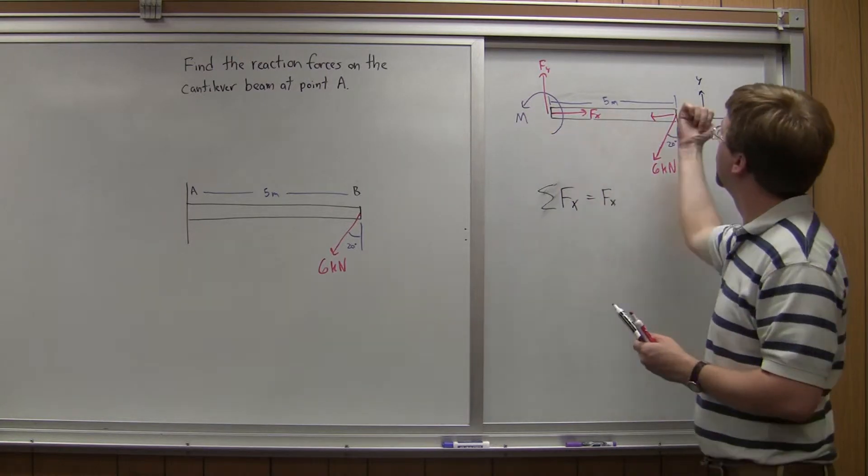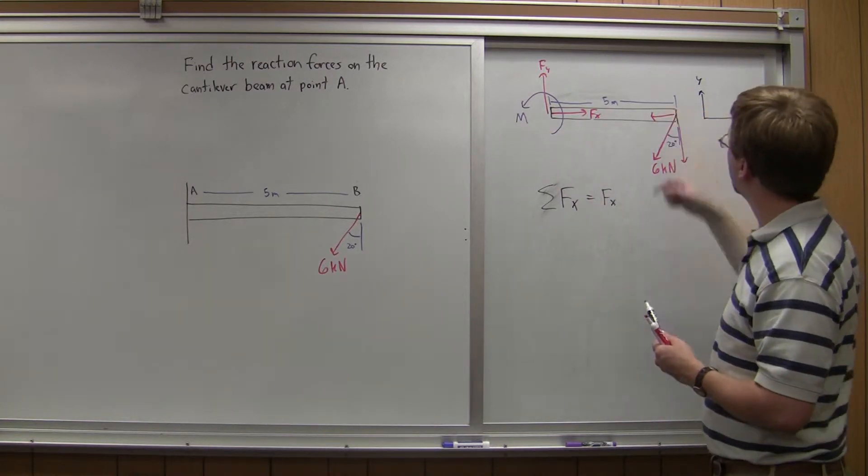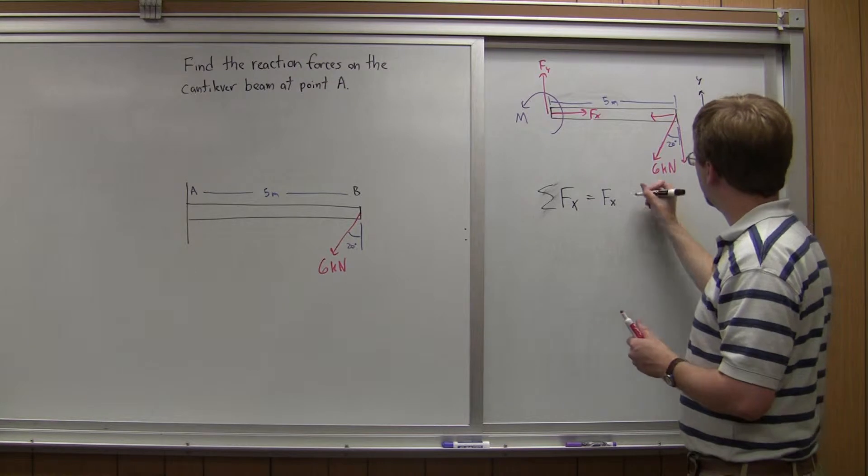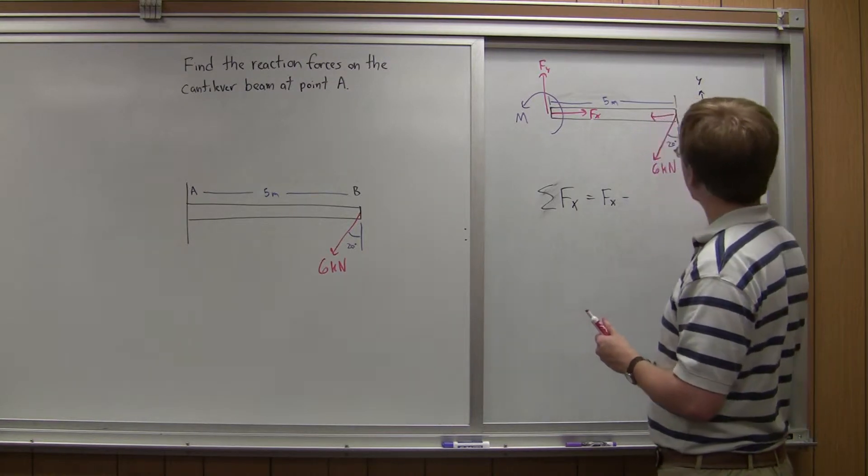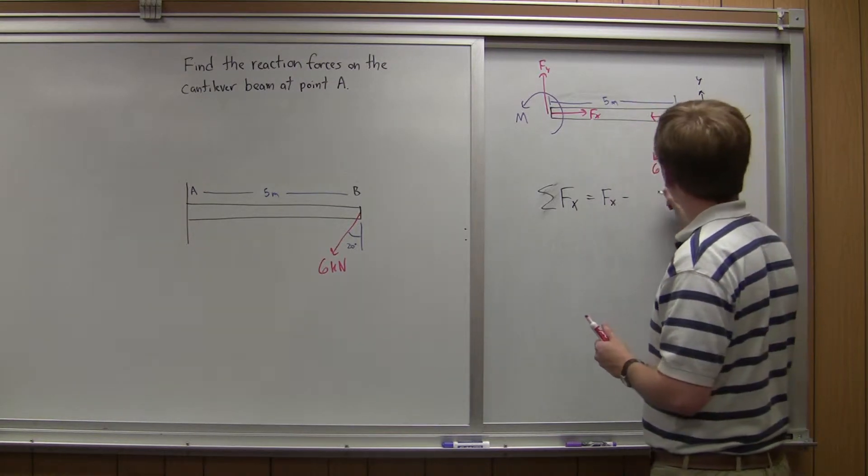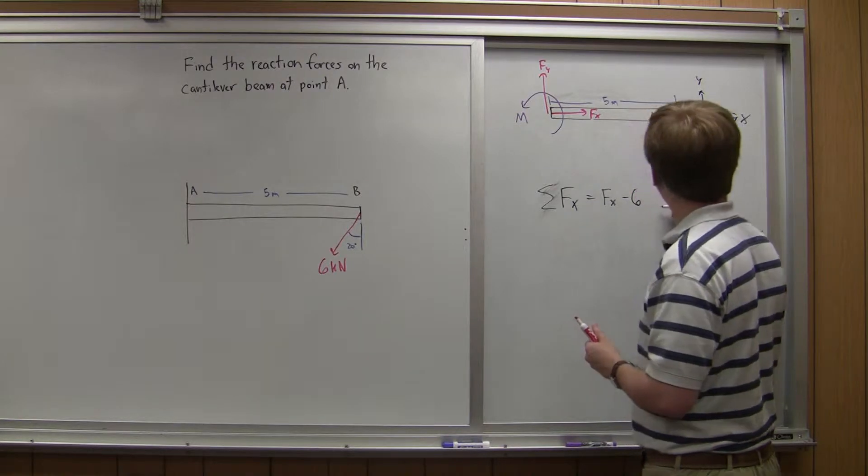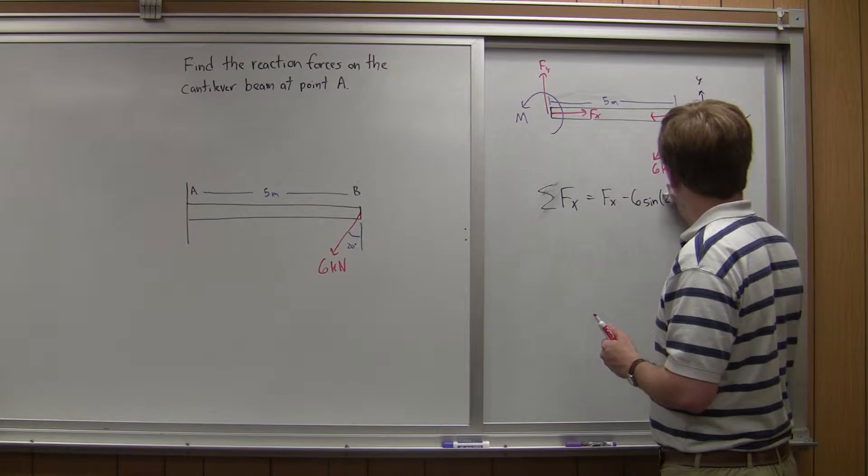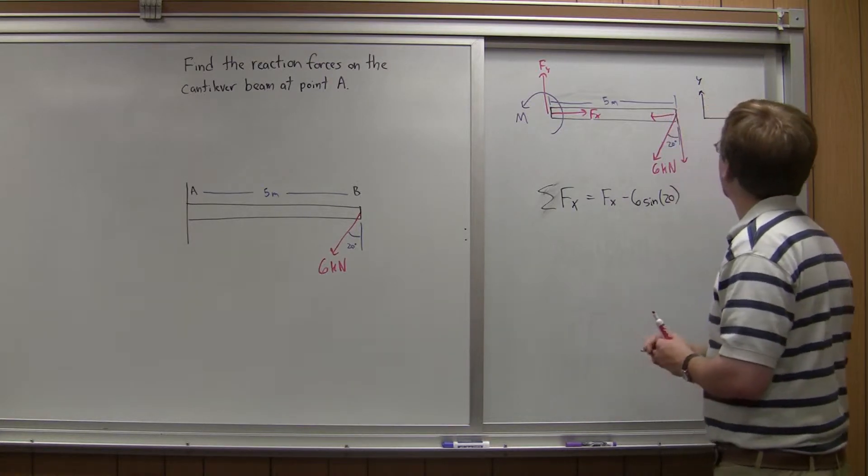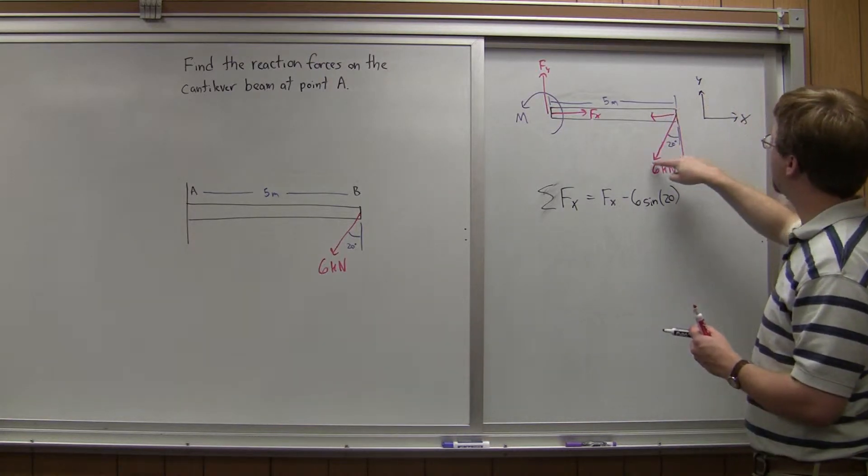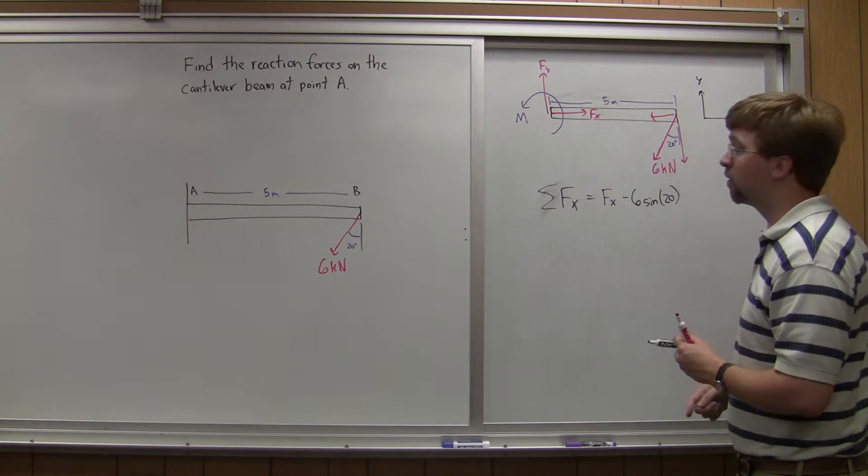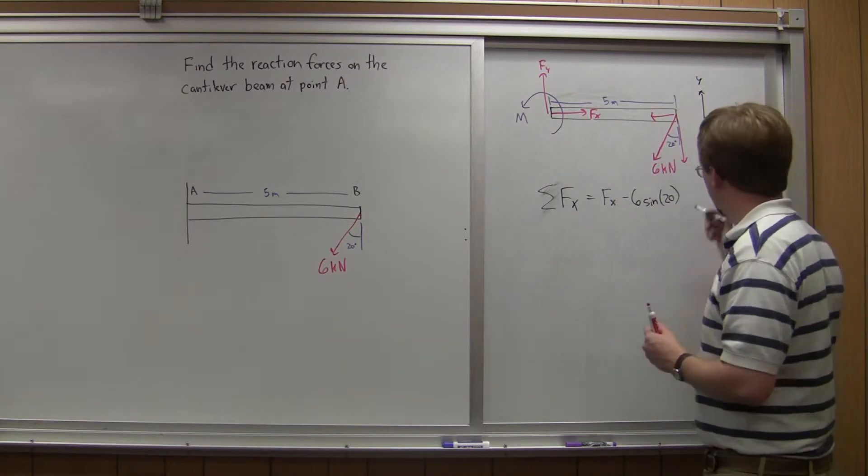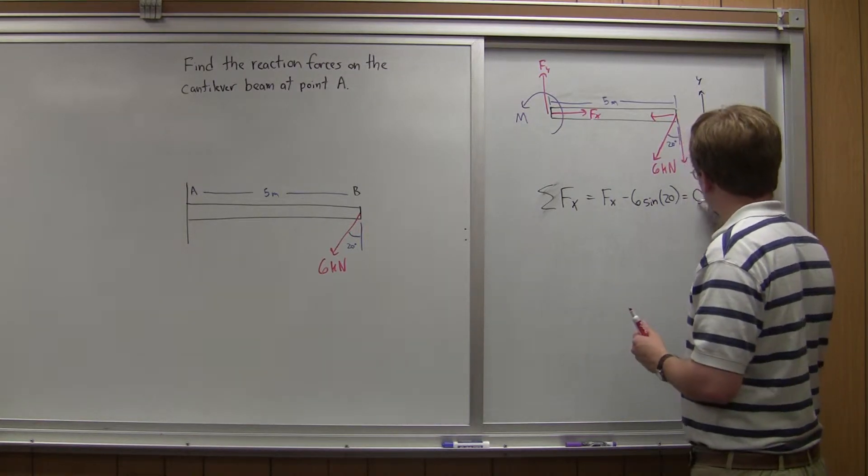Fx positive, and then this component of the vector is going to be minus, because it's going in the negative x direction, 6 times the sine of 20. I can think about this triangle, this would be the opposite side of the triangle from my angle. That is going to be equal to zero.